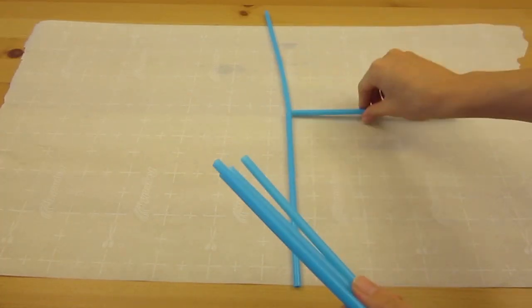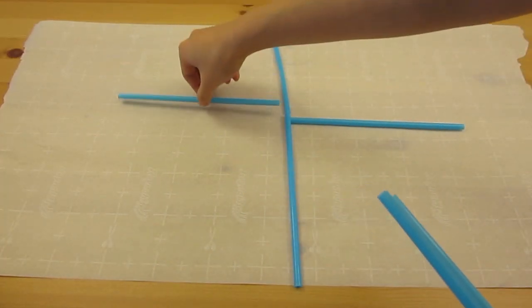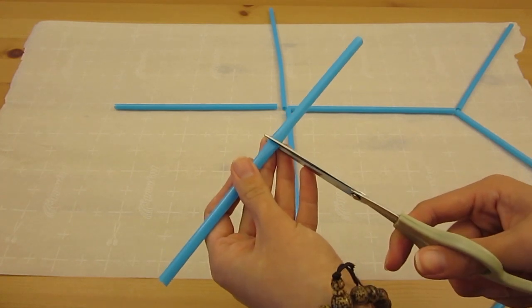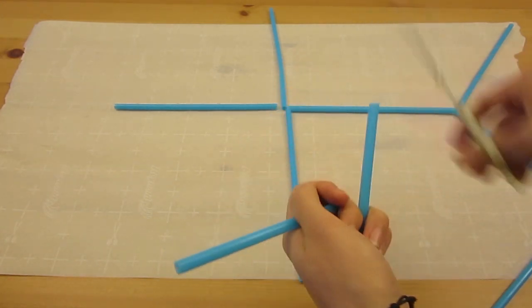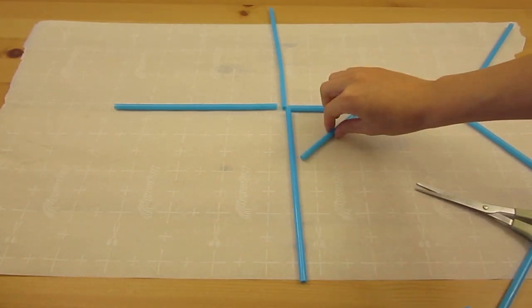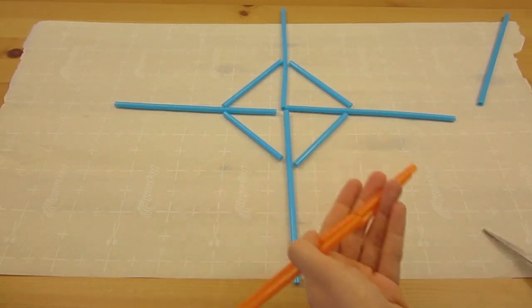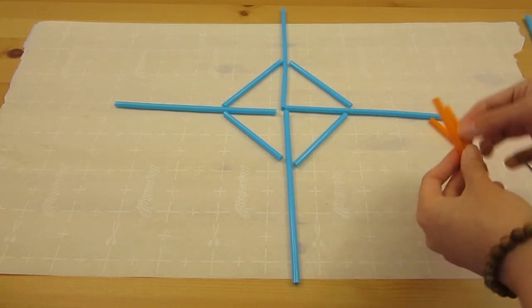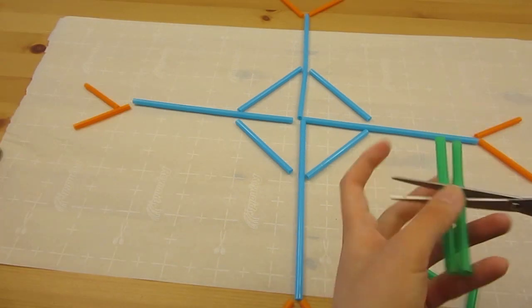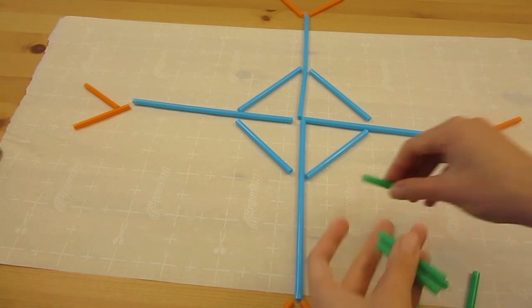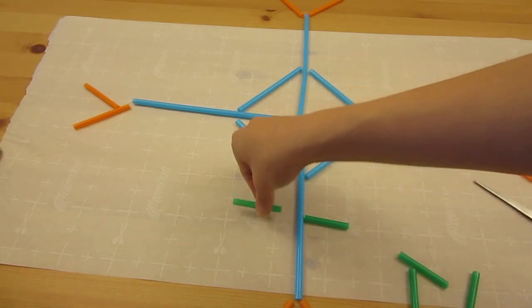Then I went ahead and designed how I want my snowflake to look. By playing around with the straws, you can easily cut it into different lengths you need. And don't worry about having different colors because we'll be painting the whole thing at the end. You can look at a picture of a snowflake for reference or just get super imaginative.